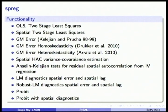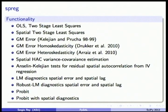In SPREG, we have a suite of estimation methods: instrumental variables for spatial two-stage least squares, generalized method of moments for spatial error dependence in various flavors (heteroscedastic or homoscedastic), robust HAC estimators for the covariance matrix, and a family of Lagrange multiplier diagnostics for different spatial effects. In version 1.4, we also have a probit with spatial diagnostics for testing spatial effects in limited dependent variable models.